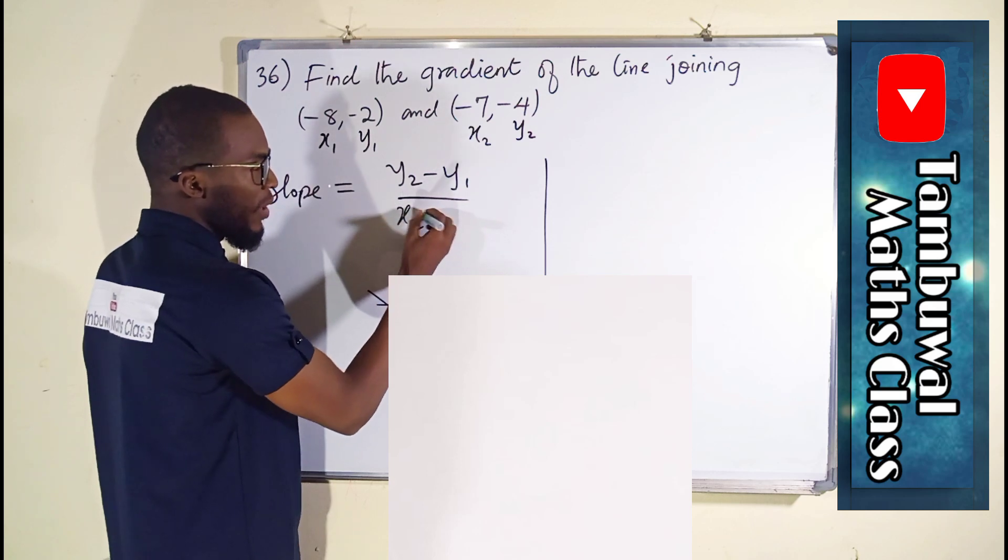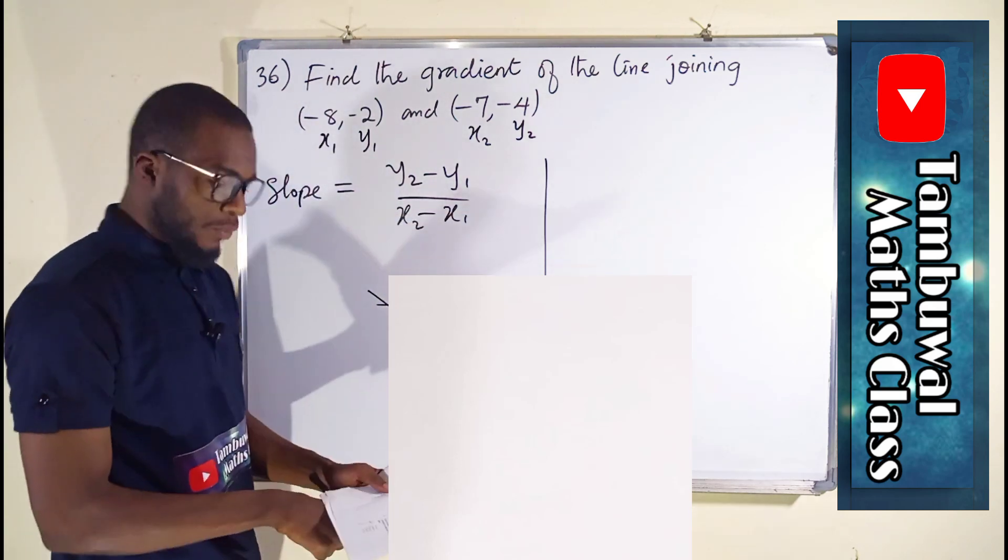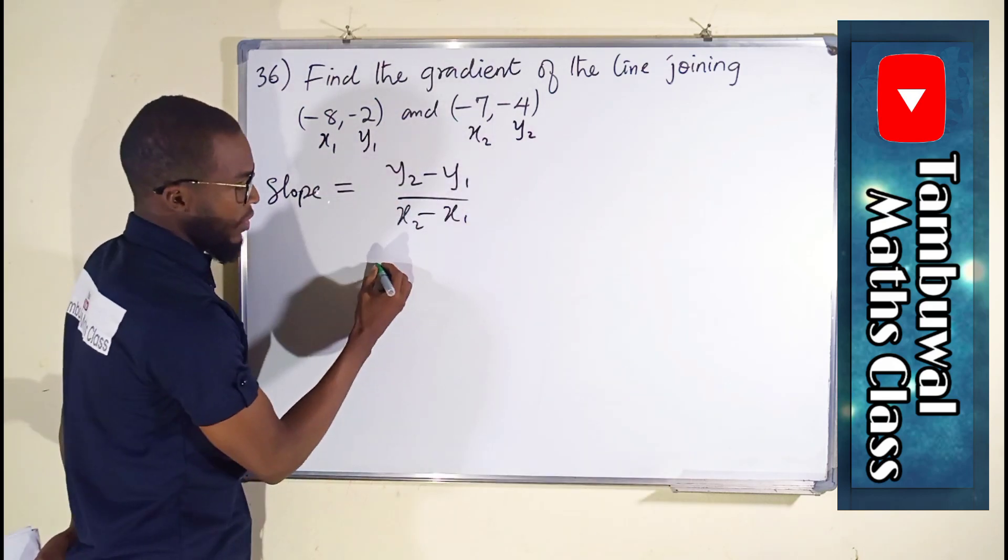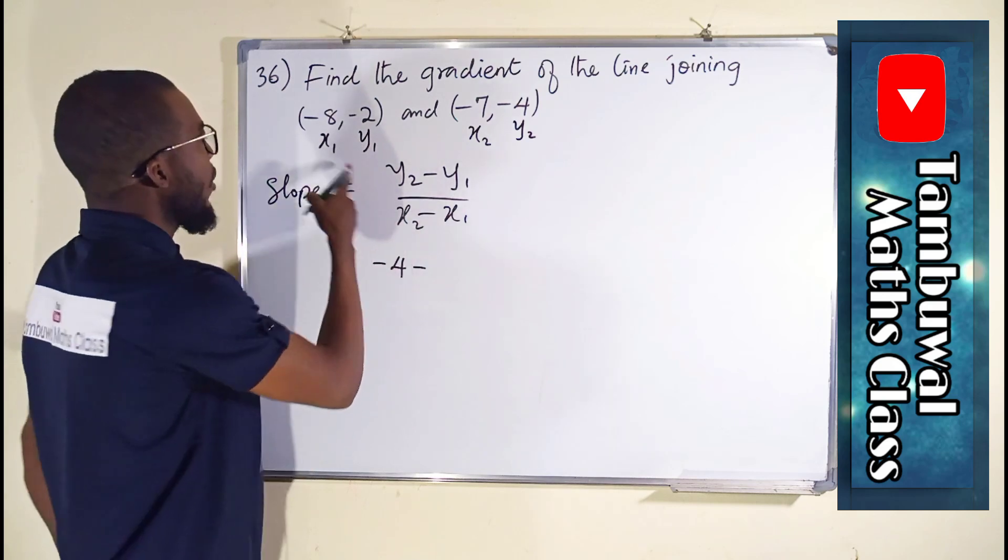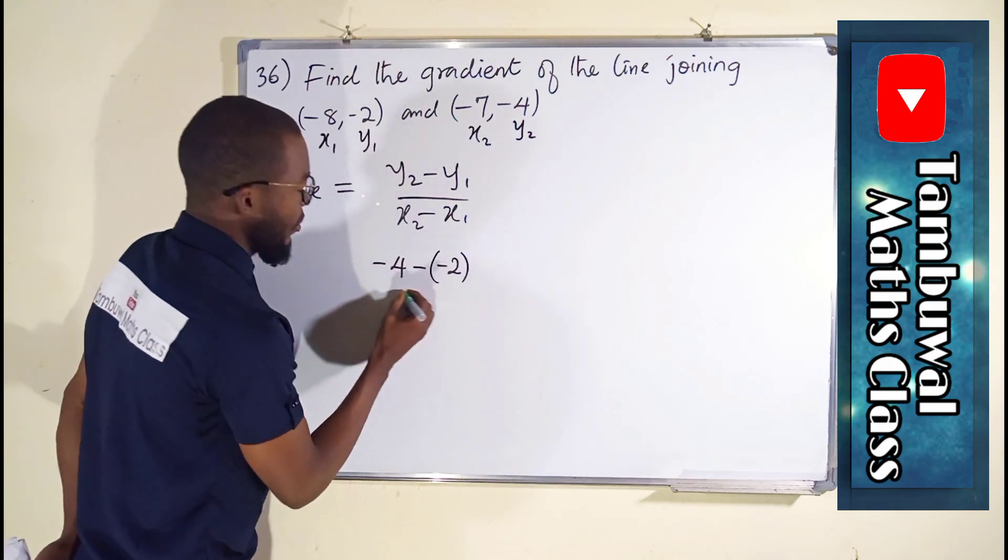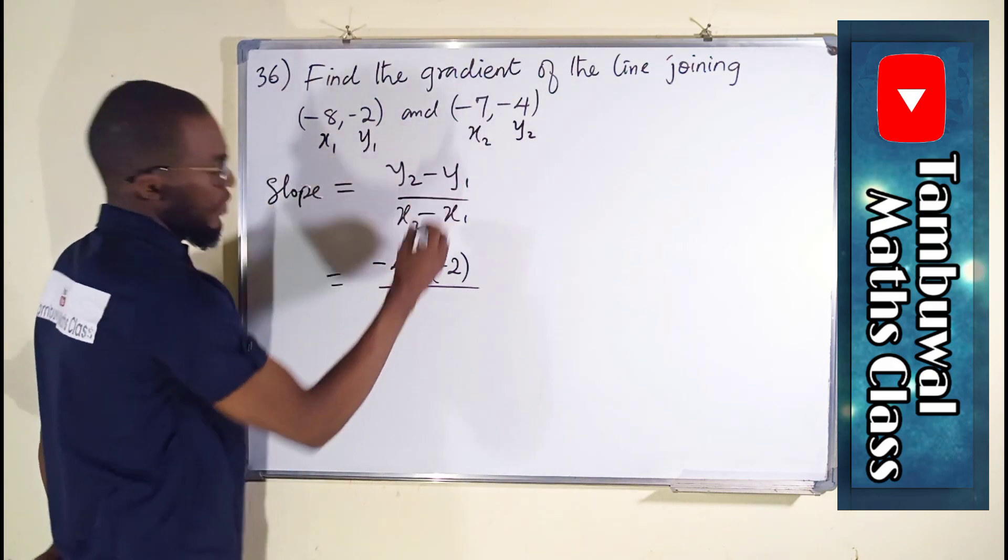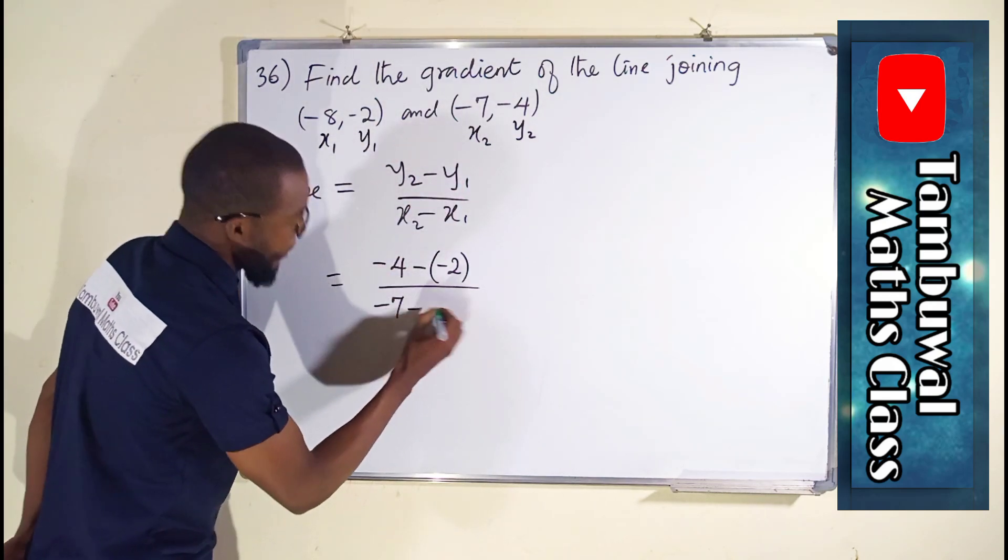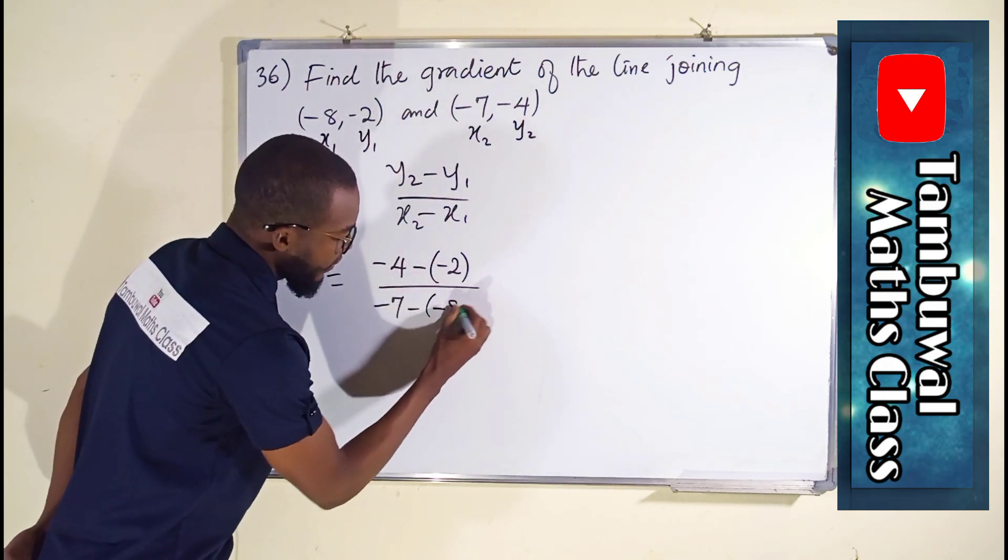Now let us substitute. y2 is negative 4 minus y1 is also negative 2, divided by x2 is negative 7 minus x1 is negative 8.